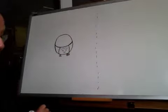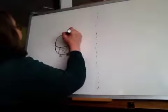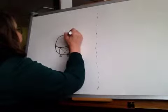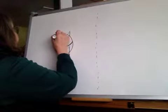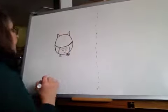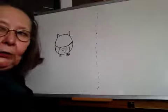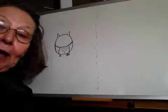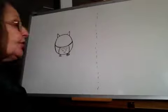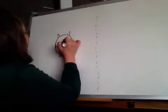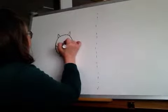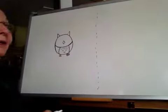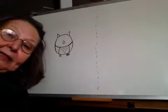Now owls have pointy ears. So at the top up here I'm going to give him some pointy ears. There we go. And they have a really sharp beak. So I'm going to put a diamond shape right in the middle of my owl. Just like that. And that'll be his beak and his mouth is underneath it.